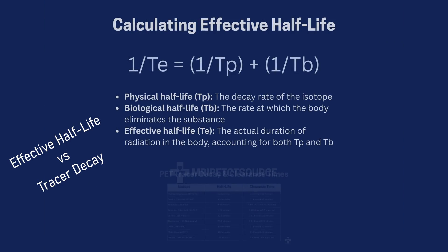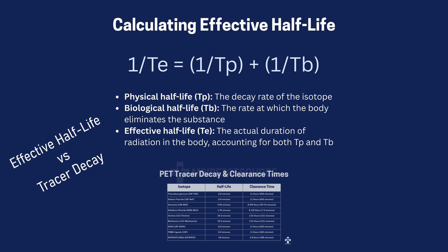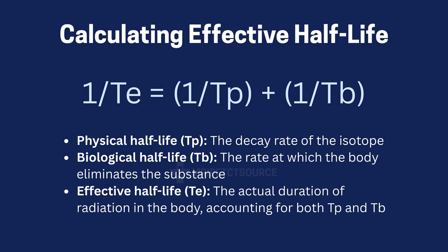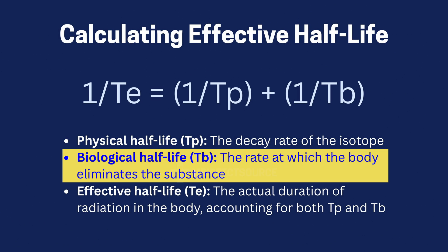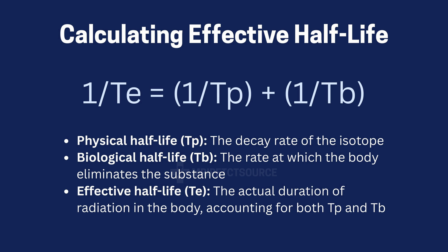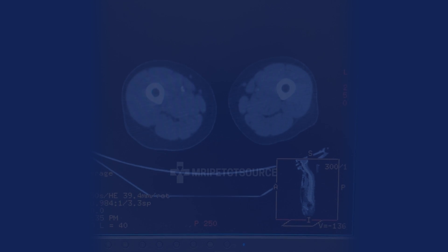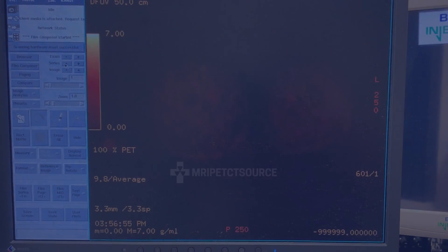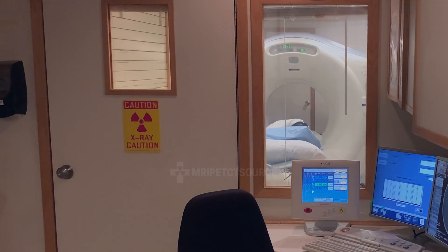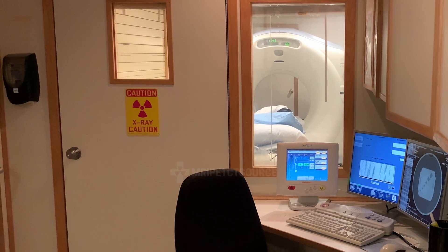Now, you might be thinking: wouldn't it be more accurate to use the formula 1 over T sub E equals 1 over T sub P plus 1 over T sub B to calculate this? The truth is, it depends. The main challenge lies with the biological half-life, T sub B. This value varies based on how different tissues absorb and eliminate the radiotracer. In certain cases, such as when FDG becomes metabolically trapped in the brain, tumors, or inflamed tissues, the body doesn't actively clear it, making the biological half-life extremely long or effectively infinite. In those situations, T sub E is roughly equal to T sub P because the biological clearance is negligible.